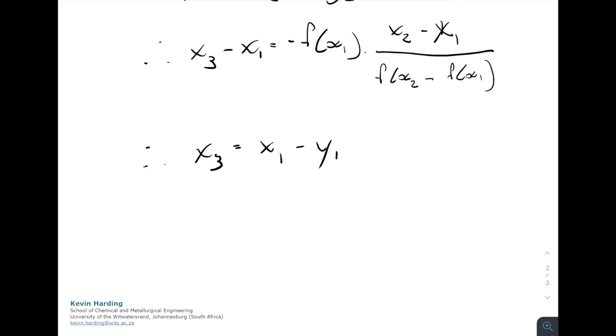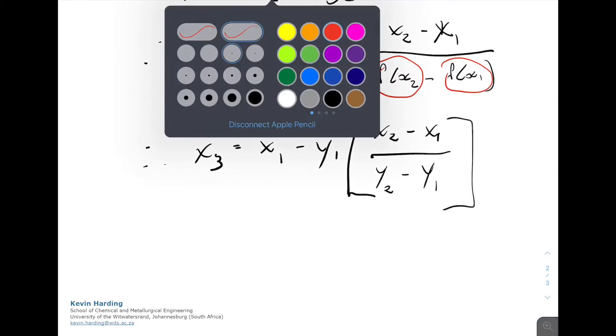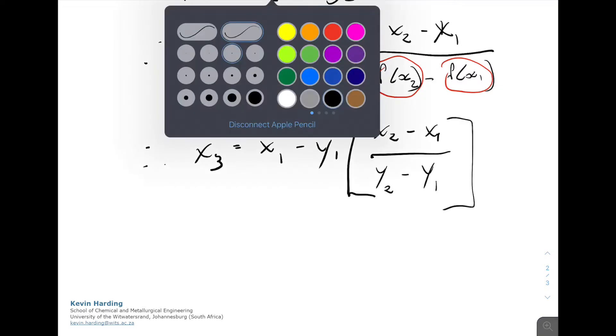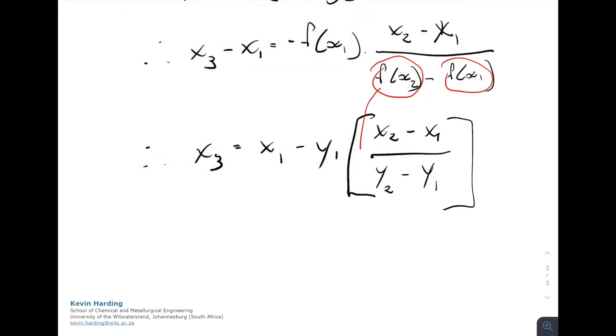We get a final answer of x3 is equal to x1 minus y1, so I've replaced the f(x) value with a y value, y1, multiplied by x2 minus x1, divided by y2 minus y1. So that is just simplifying it and converting the f(x) values, which I see I haven't put brackets in properly here. It's taking the f(x) values and moving them down into y values instead of f(x). So that is the linear interpolation that you will need to use for Regula Falsi.